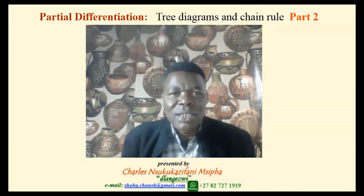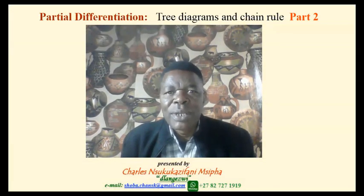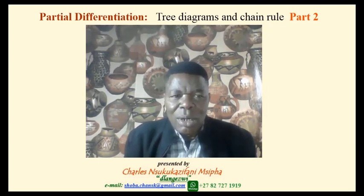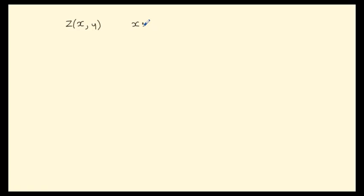Hello there, welcome to a second presentation on partial differentiation, focusing on the use of tree diagrams in conjunction with the chain rule. Recall that in our previous presentation, we considered the situation where we have a function z of x, y, where x is given as a function of a single variable t, and y is also given as a function of a single variable t, looking at how we could compute the ordinary derivative of z with respect to t.